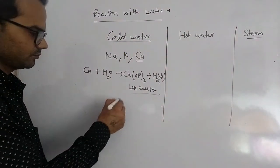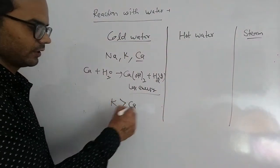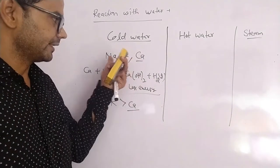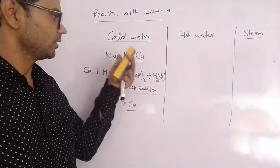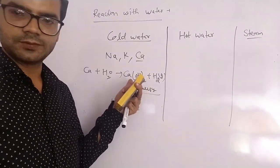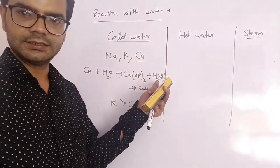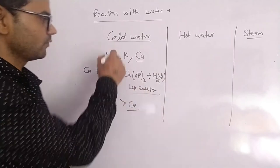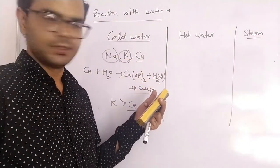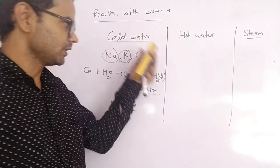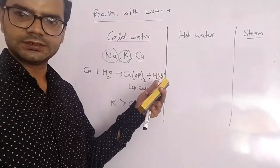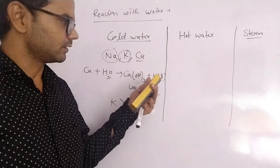As we know, potassium is more reactive than calcium. So reactive metals like sodium and potassium react with cold water and form their corresponding hydroxides, and hydrogen gas is released. In the case of sodium and potassium, the hydrogen gas catches fire, but in the case of calcium, hydrogen gas does not catch fire.